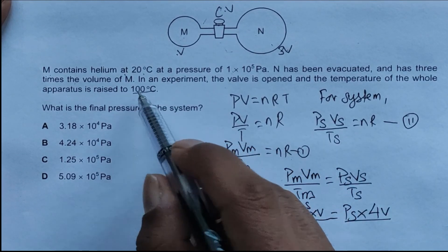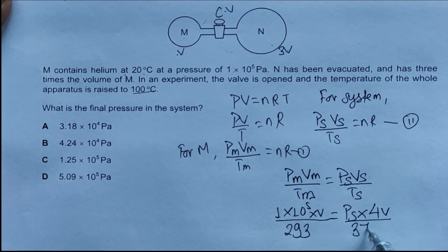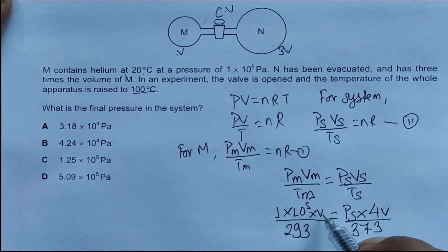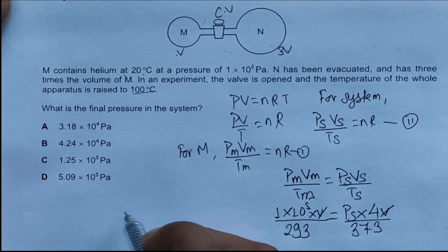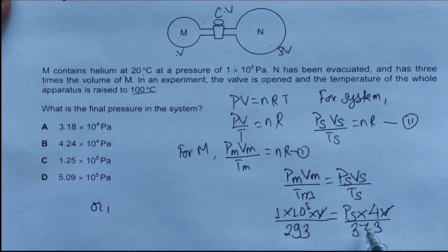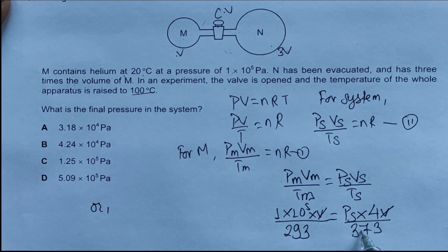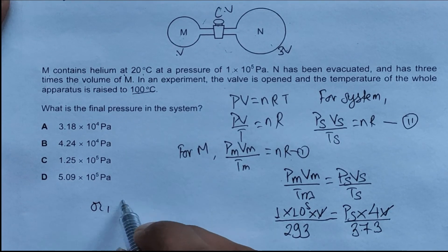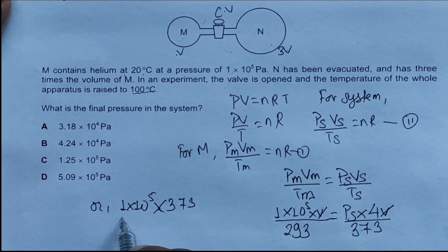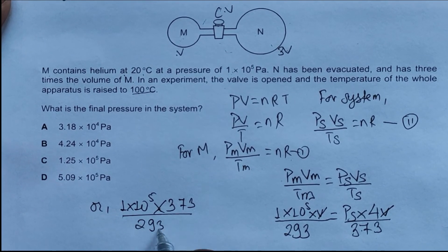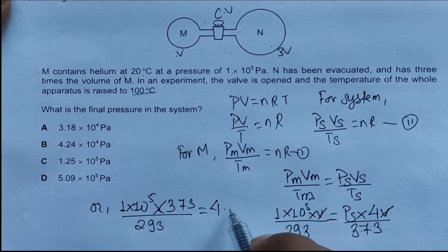Divided by T_S, which is 273 + 100 = 373. Now from here, V and V cancel out. 373 goes up, so 1×10^5 multiplied by 373 divided by 293 equals 4 times P_S.